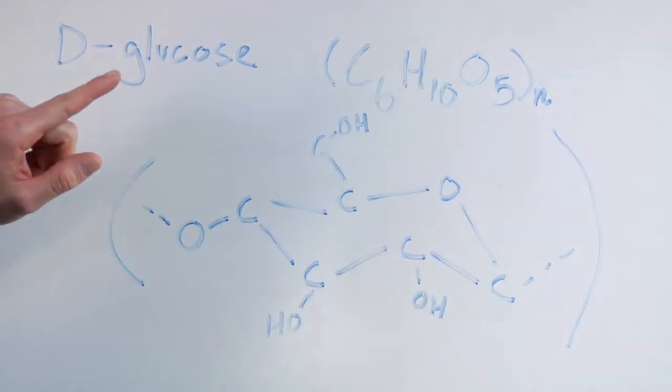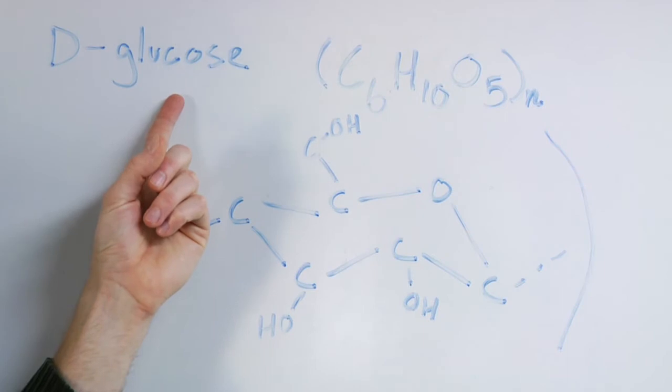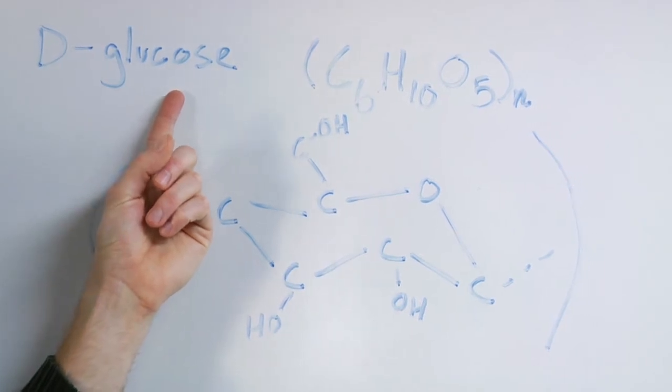Cellulose is a long chain of glucose molecules with a basic chemical structure that just gets expanded upon. Cellulose is a form of D-glucose.